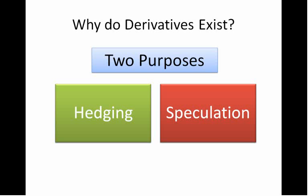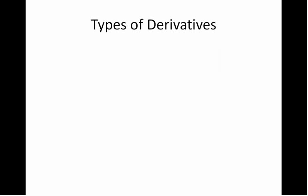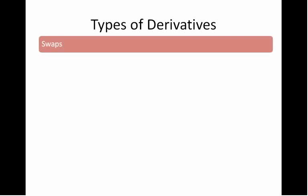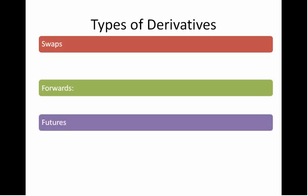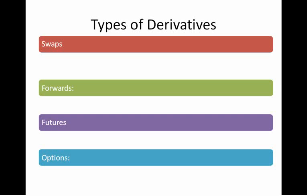Now we understand why derivatives exist at all. Let's move on to some of the different types of derivatives in the market. There are four major categories of derivatives. I'm going to create a separate video on each one of these derivative types, but for now I want to provide a basic overview of each one.